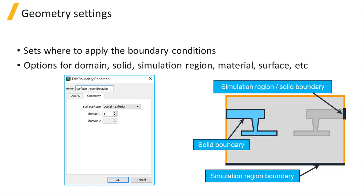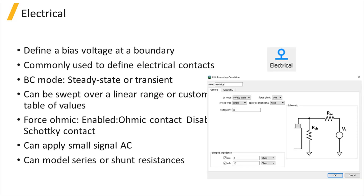The rest of the settings for different boundary condition types can differ due to the difference in their definition and behavior. An electrical boundary condition is the most commonly used boundary condition in charge simulations and can be used to define a bias voltage at a simulation boundary. It is most frequently used to define electrical contacts for a semiconductor device.